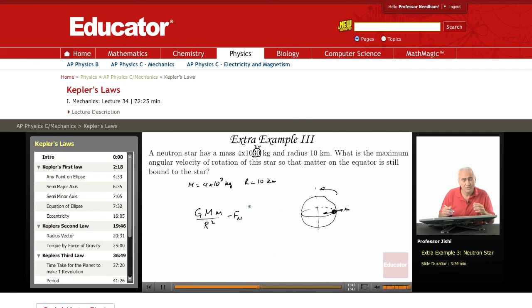This net force towards the center must equal, since it's rotating, mv square over R, which is m, and v is, because it's on the equator, v on the equator is omega R. So v square is omega square R squared over R, so this is m omega square R.